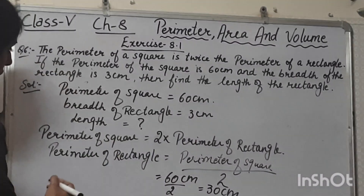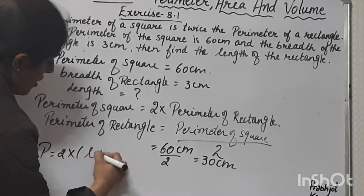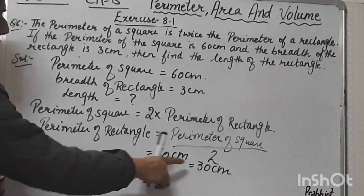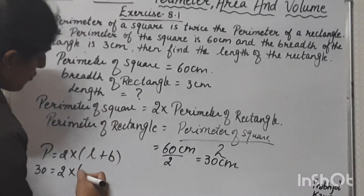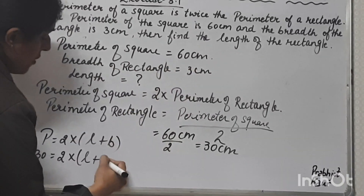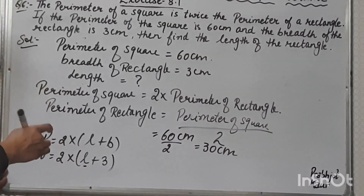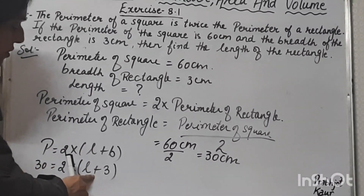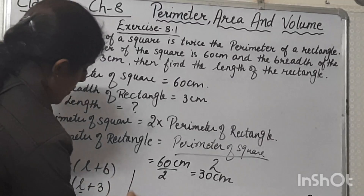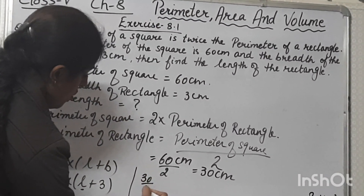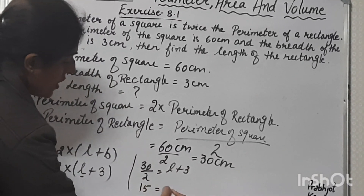Now, perimeter of the rectangle is 30 cm and breadth is 3 cm, and we have to find the length. The perimeter of a rectangle is 2 multiplied by (length plus breadth). So 30 = 2 multiplied by (l + 3). Dividing both sides by 2: 30 upon 2 equals l plus 3, giving us 15 = l + 3.